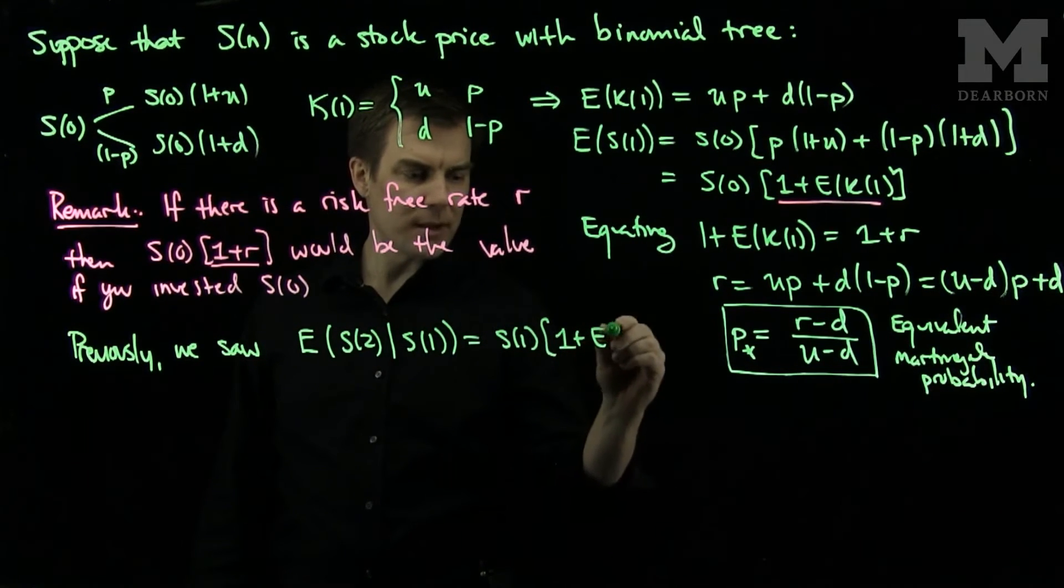Now one of the factors of ν will cancel out this (1+R), so this (1+R) will cancel out with one of the factors of n and replace it with n-1, so I will have that this is equal to ν^{n-1} times S_{n-1}.